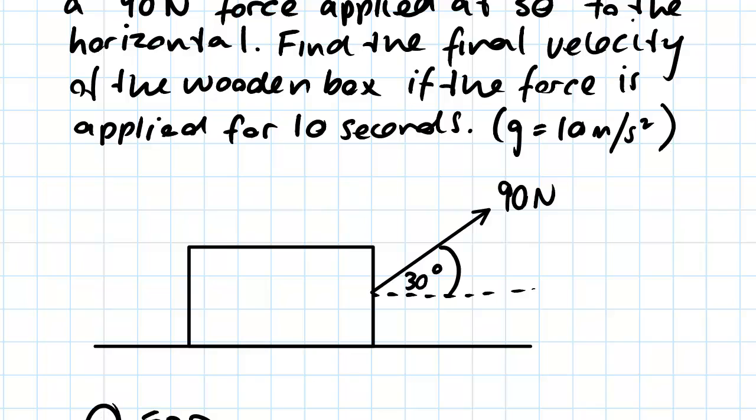As you know, the impulse is the change in momentum. We have a box which is initially stationary, meaning the initial velocity is zero, so hence the initial momentum is zero. What we're going to be doing is finding out the final momentum using impulse.